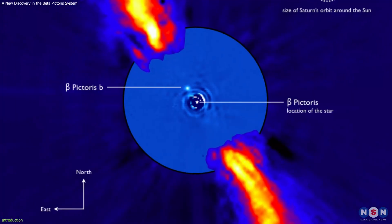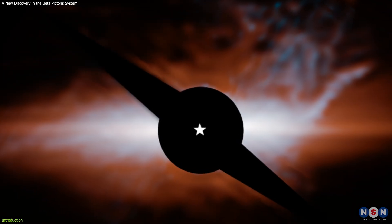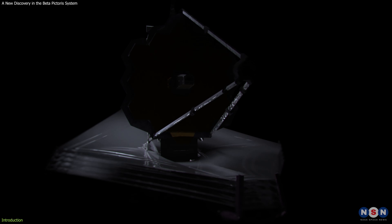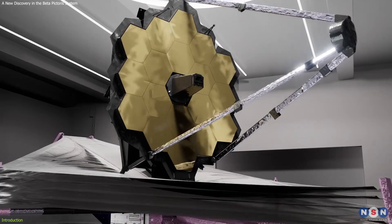This is the Beta Pictoris system, one of the most fascinating and intriguing systems in the universe. And it has just revealed a new secret, thanks to the most powerful and complex space telescope ever built, the James Webb Space Telescope.